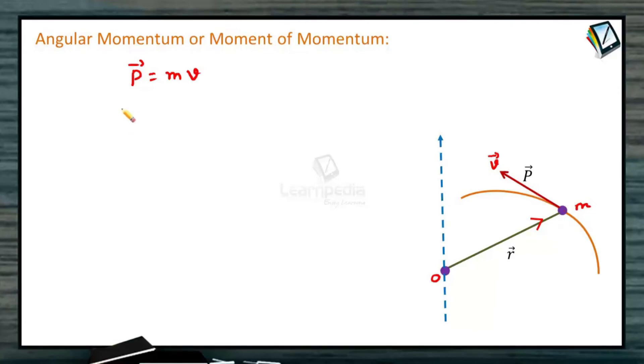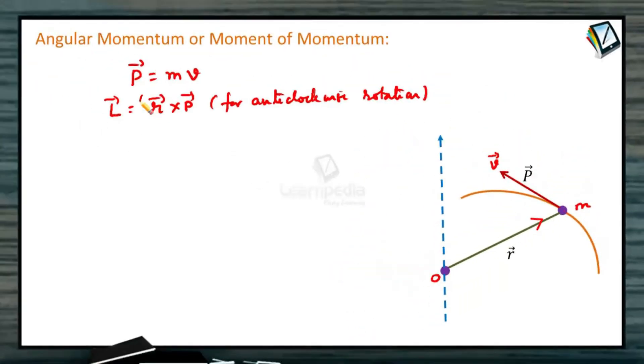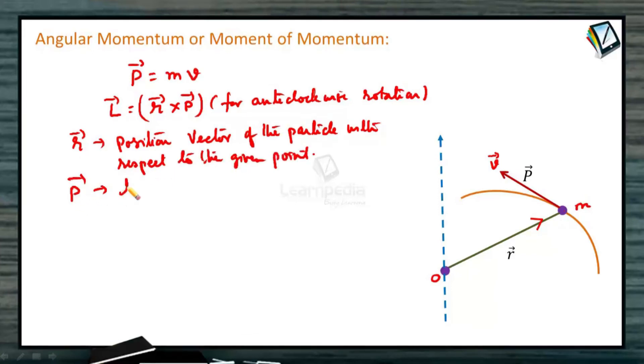So tangential velocity of the particle at this point is v. The angular momentum of a particle about a point is defined as L vector is equal to r cross p for anti-clockwise rotation. It is the product of linear momentum and the length of the perpendicular to the line of the linear momentum from the fixed point. It is a cross product of r and p. R is the position vector of the particle with respect to the given point, whereas p is the linear momentum of the particle relative to the point.